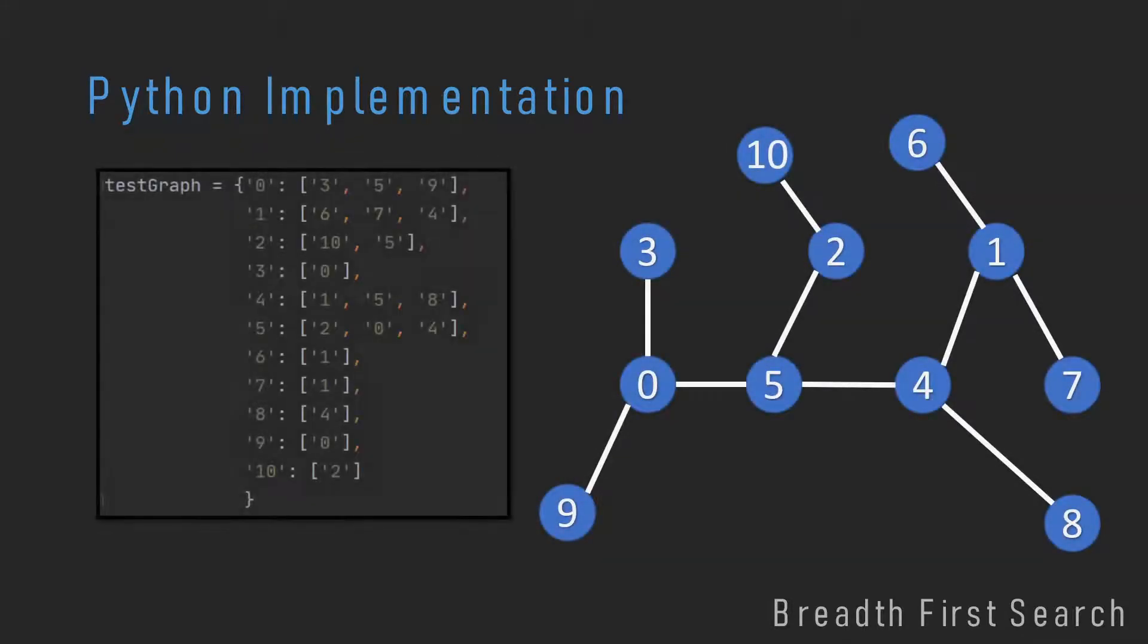In Python we can implement a graph with a dictionary, and in this dictionary the keys are all the nodes. For example, in line 1 we have the key 0, this stands for node 0, and node 0 has a list mapped to it of 3, 5 and 9, and 3, 5 and 9 are all neighbors of the 0. So this is a pretty cool way to implement a graph.